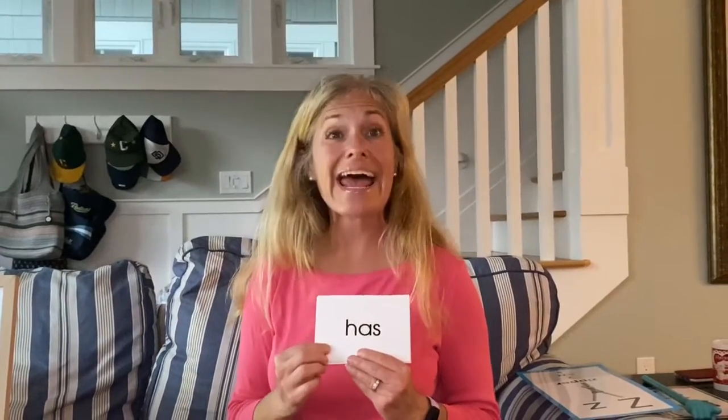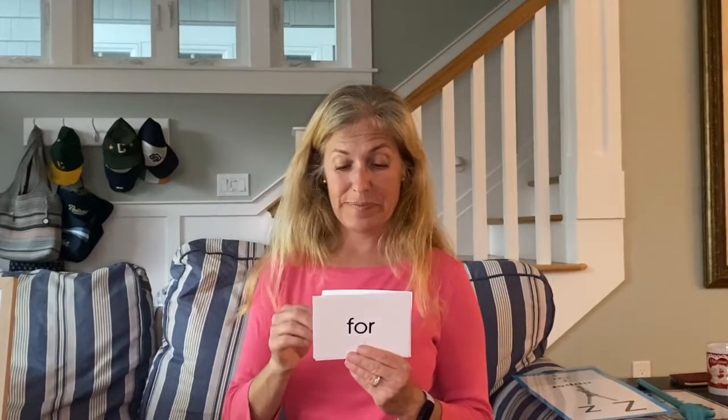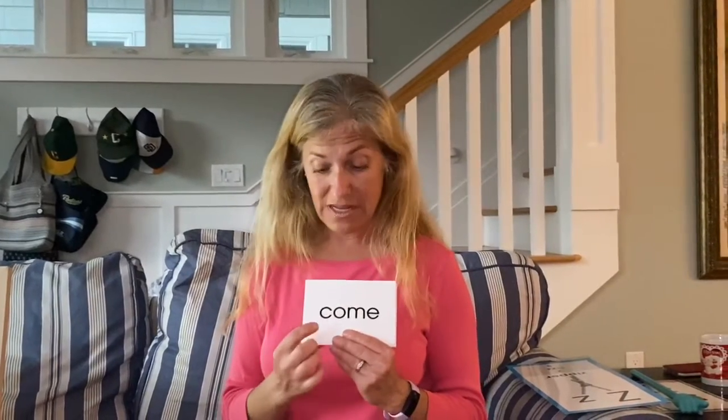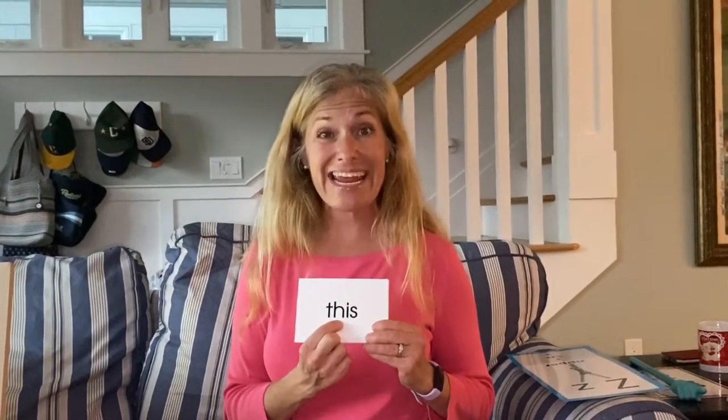Let's review our sight words that we've gone over during distance learning. The first one is 'here' — H-E-R-E. The next one is 'are' — A-R-E. Then we had 'has' — H-A-S. And then we had 'have' — H-A-V-E. Next was 'for' — F-O-R. Last week we reviewed 'come' — C-O-M-E. And this week we're going to learn the word 'this,' spelled T-H-I-S.